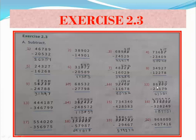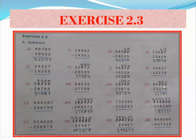Twelfth: 86,500 minus 23,179. Ones and tens are 0, so borrow from hundreds — hundreds 5 becomes 4, tens 0 becomes 10. Borrow from tens — tens 10 becomes 9, ones 0 becomes 10. 10 minus 9 equals 1. Tens: 9 minus 7 equals 2. Hundreds: 4 minus 1 equals 3. Thousands: 6 minus 3 equals 3. Ten-thousands: 8 minus 2 equals 6. Answer equals 63,321.